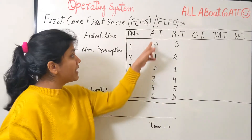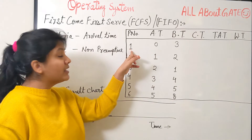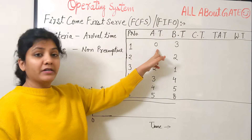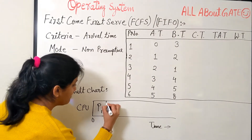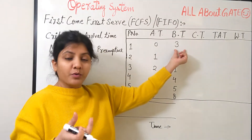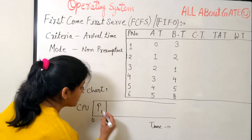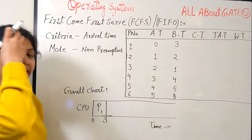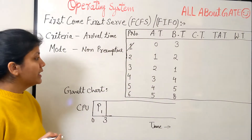Looking at the arrival times, the minimum arrival time is zero, meaning some process arrived at time zero. That process is P1 — whoever came first out of all processes, P1 came first at time zero. So we allocate the CPU to P1. Since the algorithm is non-preemptive, whatever burst time P1 needs is given right away.